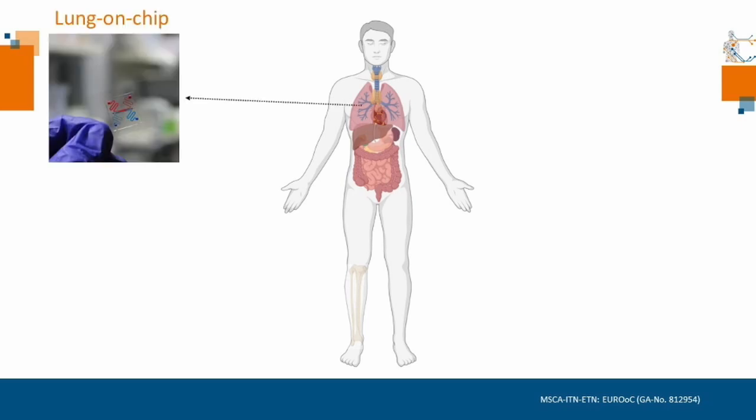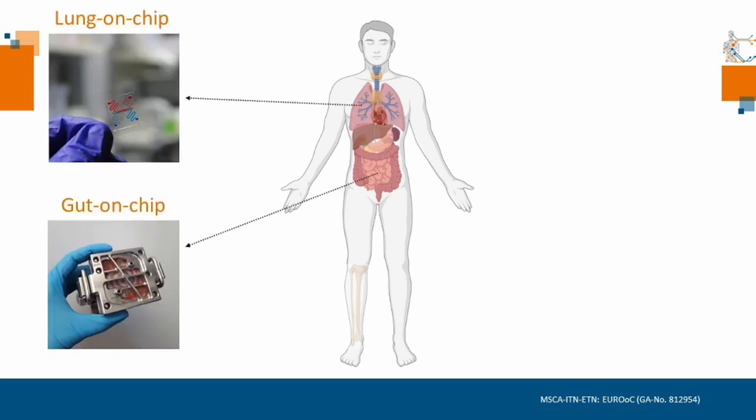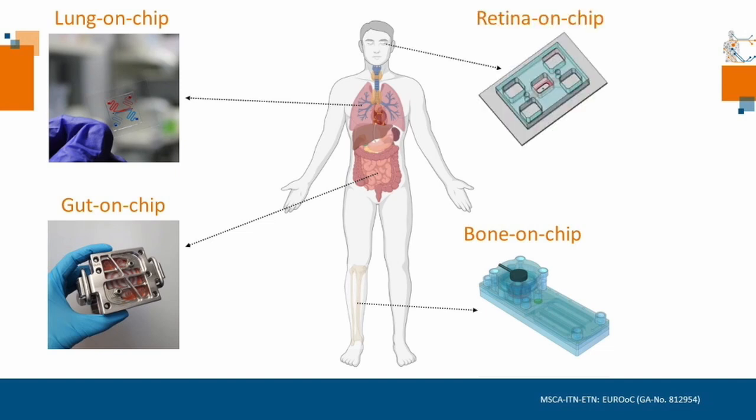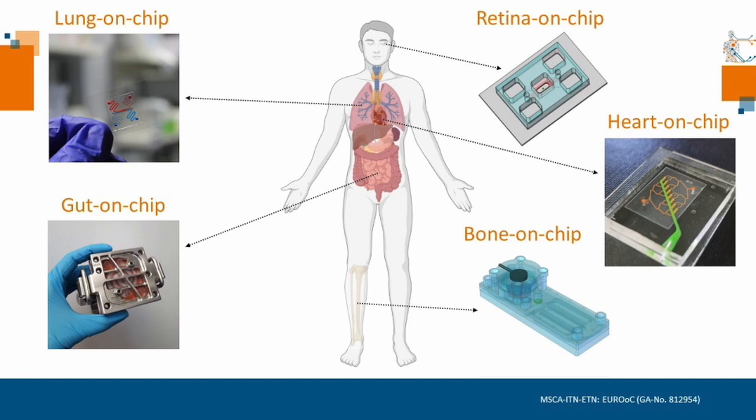Within the ITN network, we work on various organ-on-chip models to investigate various organs and diseases. We would like to show you how we make these chips, what we do with them, and give some examples of organs and diseases we study.